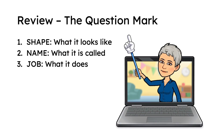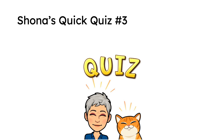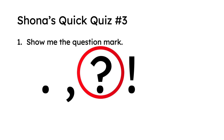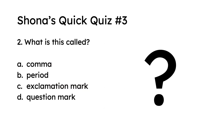Today we talked about the question mark — what it looks like, what it is called, and what it does. I made you a really quick quiz. It's just three questions. Number one: show me the question mark. This is the question mark. Number two: what is this called? Multiple choice — A, comma; B, period; C, exclamation mark; or D, question mark. The answer is D. It's a question mark.